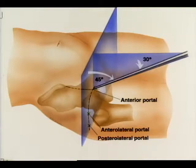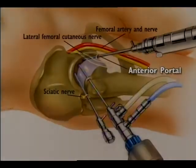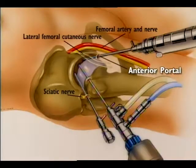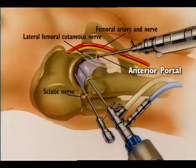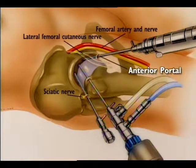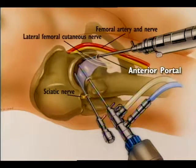It is directed approximately 45 degrees cephalad and 30 degrees towards the midline. At the level of the anterior portal, the lateral femoral cutaneous nerve is typically divided into three or more branches. One of these branches will always lie close to the portal and is especially vulnerable to laceration if the skin incision is carried too deeply.